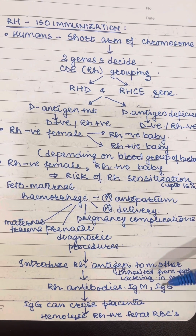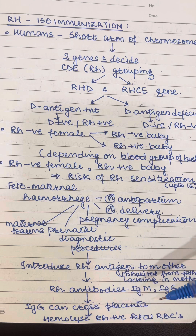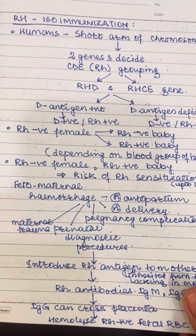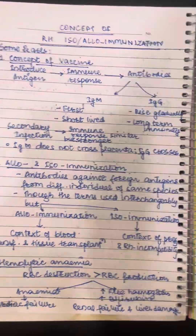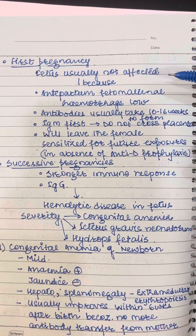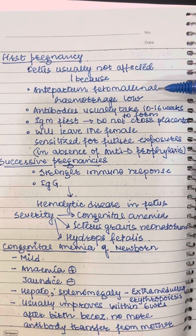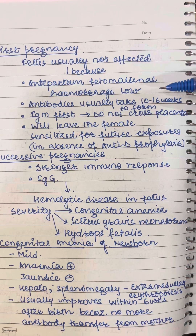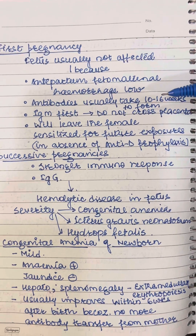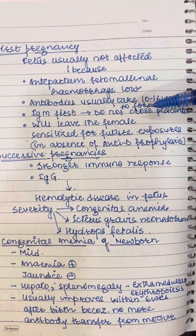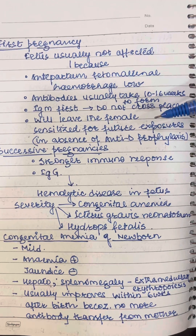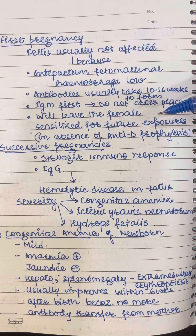These antibodies of IgG type then cross the placenta and reach the fetal RBCs, causing damage to the RBCs. Now if it's a first pregnancy of such combination, the fetus will not be affected usually, because the amount of hemorrhage is low antepartum. It takes some time for the antibodies to develop, and the antibodies are more of IgM type which do not cross the placenta. But this first pregnancy will lead the female to be sensitized for future exposures, like secondary infections after vaccination.